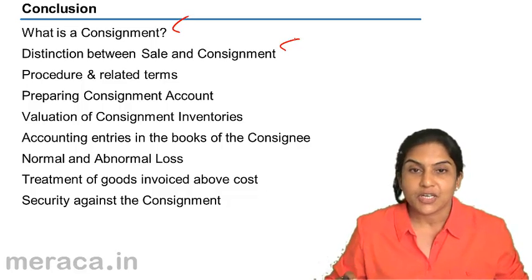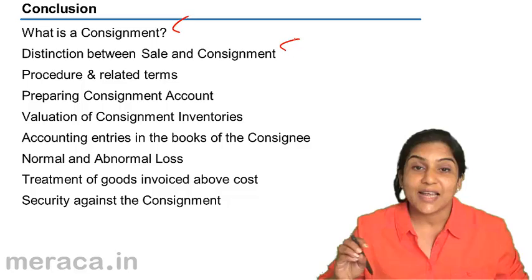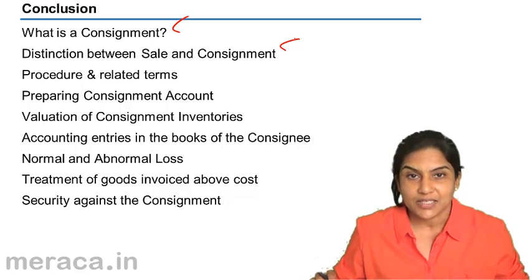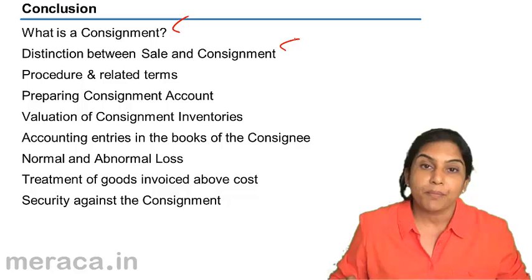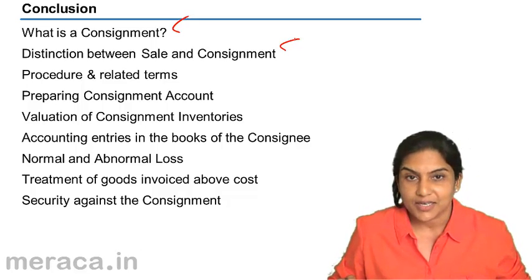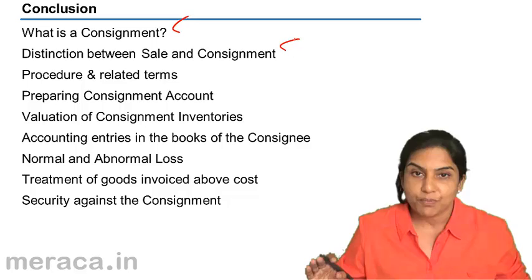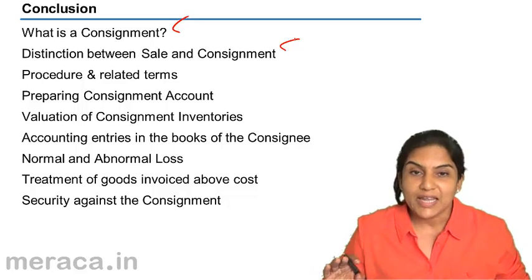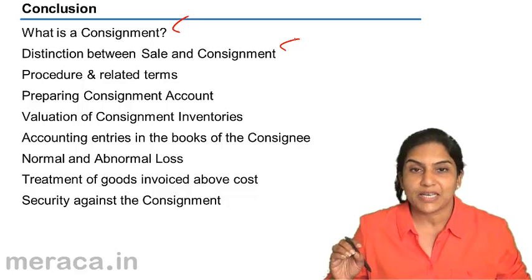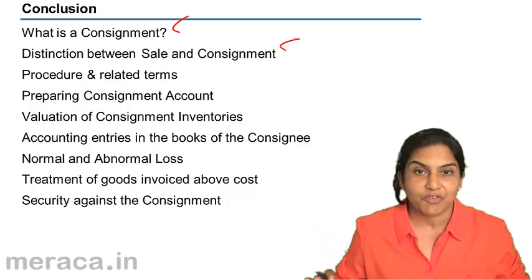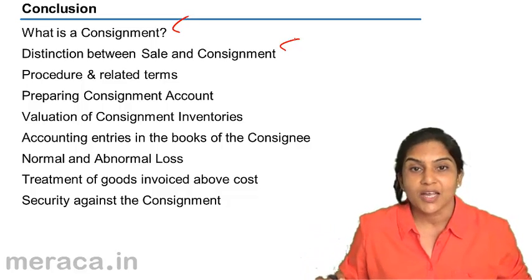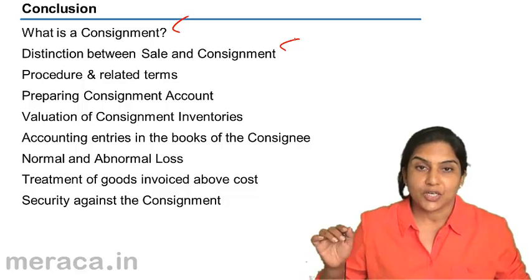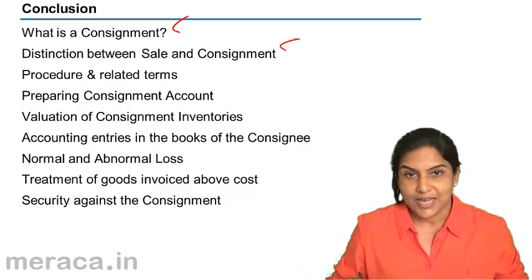But in the case of a consignment, goods are only sent by the consignor so that the consignee will sell the goods on behalf of the consignor. There is no sale transaction and ownership is not transferred. Therefore, any expenses borne by the consignee for maintaining or safeguarding the goods are actually expenses of the consignor, because the goods continue to belong to the consignor.